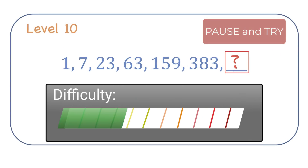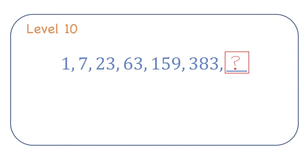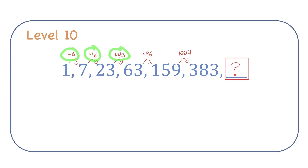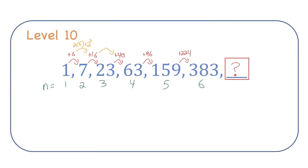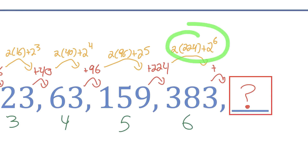Level 10. Finding a pattern in this sequence will be pretty challenging. Your first instinct might be to analyze the differences in consecutive values: 6, 16, 40, and so on — but there doesn't seem to be a clear pattern. You could find one: doubling the difference and then adding a power of 2. So to get the next difference, do 2 times 224 plus 2 to the power of 6, which is 512, and then 383 plus 512 gives the last number in the sequence, which would be 895.